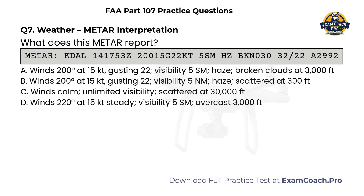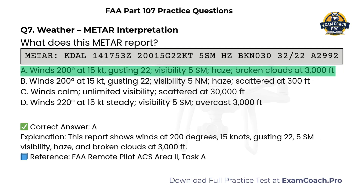Weather. METAR interpretation. Refer to the METAR example. What does this METAR report? A. Winds 200 degrees at 15 knots gusting 22, visibility five statute miles, haze, broken clouds at 3,000 feet. B. Winds 200 degrees at 15 knots gusting 22, visibility five nautical miles, haze, scattered at 300 feet. C. Winds calm, unlimited visibility, scattered at 30,000 feet. D. Winds 220 degrees at 15 knots steady, visibility five statute miles, overcast 3,000 feet. Correct answer: A. This report shows winds at 200 degrees, 15 knots gusting 22, five statute miles visibility, haze, and broken clouds at 3,000 feet.